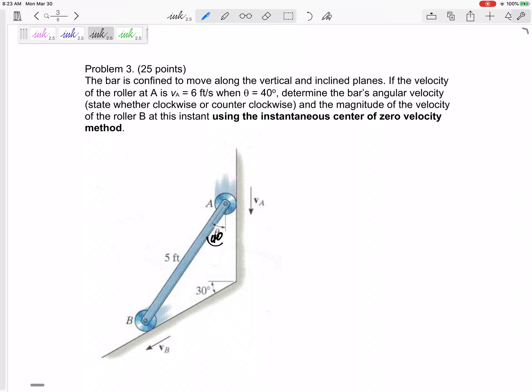Then determine the bar's angular velocity, state clockwise or counterclockwise, and the magnitude of the velocity of the roller B at this instant, using instantaneous center of zero velocity.